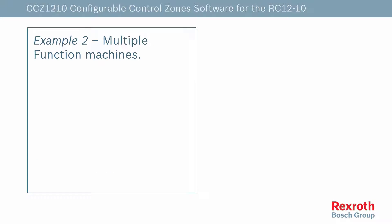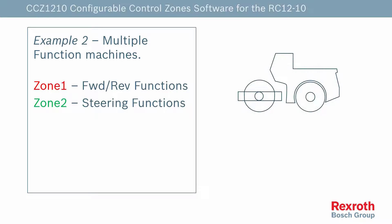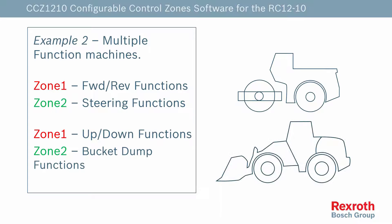In our second example, we show two machine applications with multiple functions. The first is a road roller: zone 1 is set up as a DSD to control forward and reverse, and zone 2 as a DSD to control the steering left and right. The second machine is a loader: zone 1 is set up as a DSD to control the valves for up-down functions, and zone 2 as a DSD to the valve that controls the bucket-dump functions.